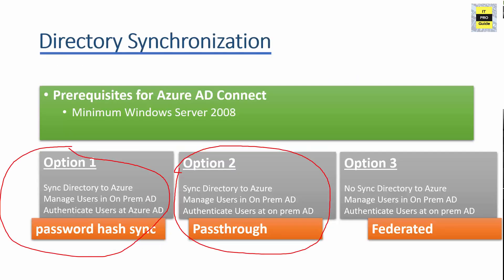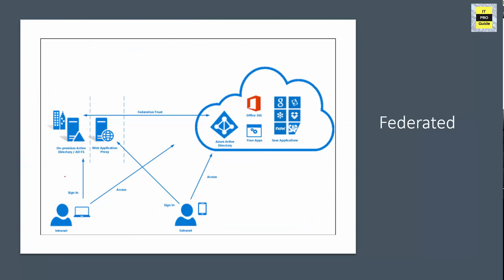The third option is Federated Authentication using Active Directory Federation Services. This is a more complex authentication method preferred by large enterprise organizations that have complex authentication requirements. In this case, Office 365 and Azure Active Directory hand off authentication completely to on-premises, and Active Directory Federation Service issues a token to Office 365 to authenticate the accounts.